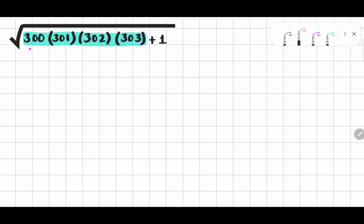Let us consider 300 as x. If it is x, 301 will be x plus 1. The next number is x plus 2. And the last one is x plus 3. And please don't forget to write the plus 1.